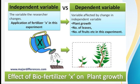On the figure, we can see the effect of biofertilizer X on plant growth. We can identify the independent and dependent variables. The independent variable is the application of fertilizer X. The dependent variables are: plant growth, number of leaves, number of roots, and so on.